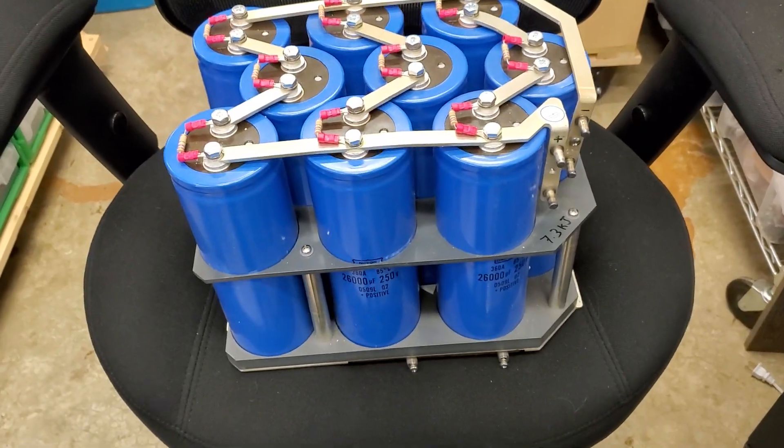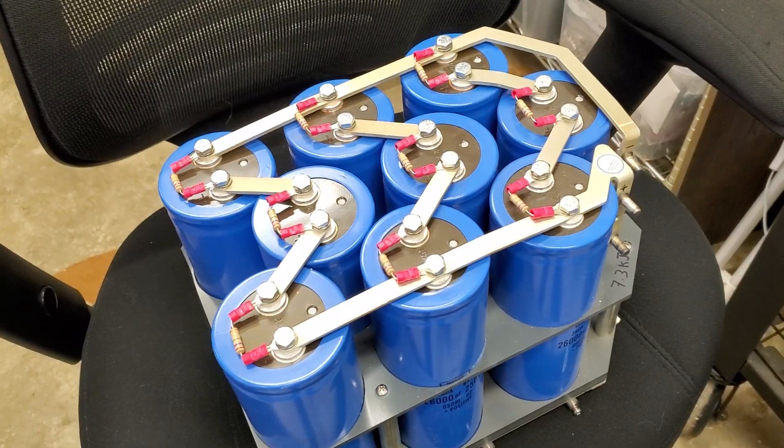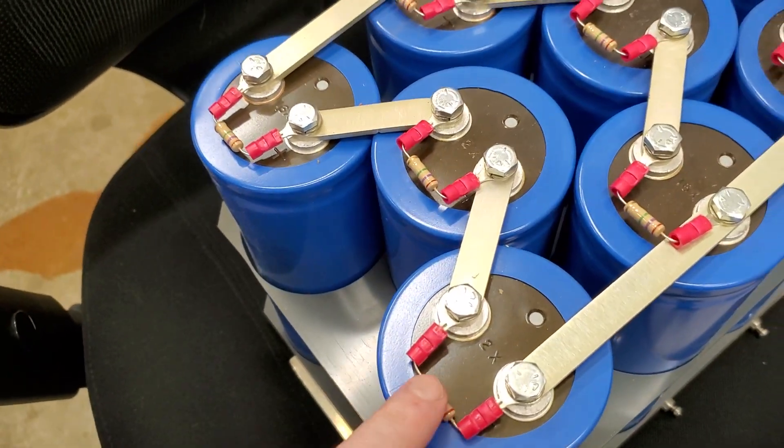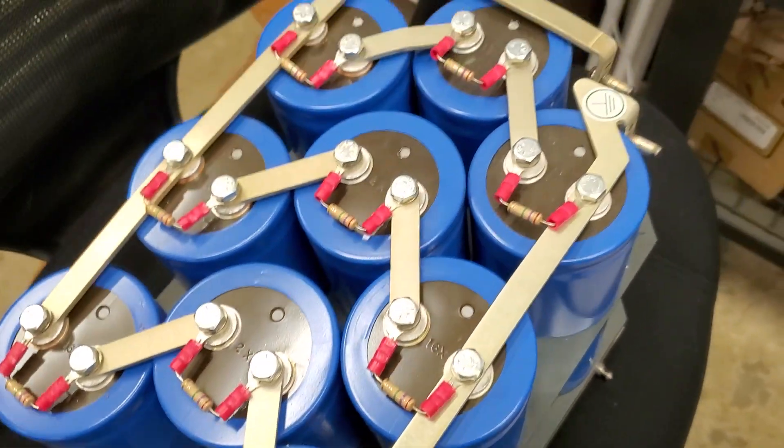Something like this, though, is where this resistor discharge becomes very impractical. This is a 7.3 kilojoule bank. Discharging this with that tool would take a very, very long time.